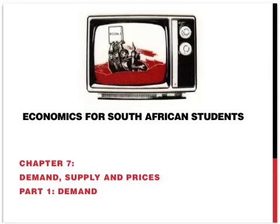You are watching EconomTier 4, the unofficial broadcaster of economics for South African students. This episode is about Chapter 7, Demand, Supply and Prices. This is Part 1 of 4 and we will be looking at the individual demand curve.